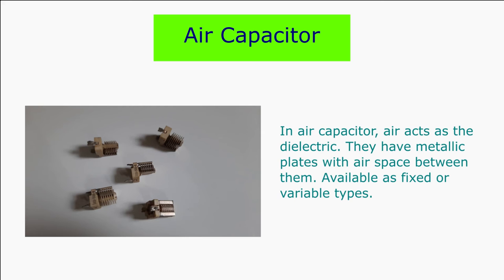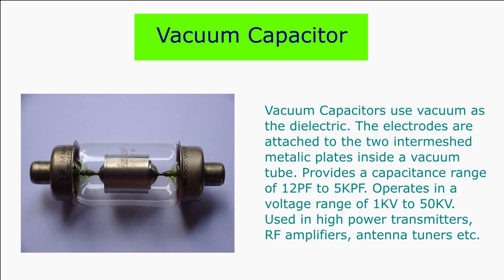Air capacitors are capacitors with air as the dielectric. They have conducting plates with the air space in between them and can be fixed or variable type. Vacuum capacitors use vacuum as the dielectric and are constructed similar to vacuum tubes. The electrodes are attached to two intermeshed concentric metal cylinders inside a vacuum tube. They provide a capacitance range of 12 pF to 5 kilo-pF and are commonly used in high-voltage applications from 1 kV to 50 kV, such as high-power transmitters, RF amplifiers, and antenna tuners.